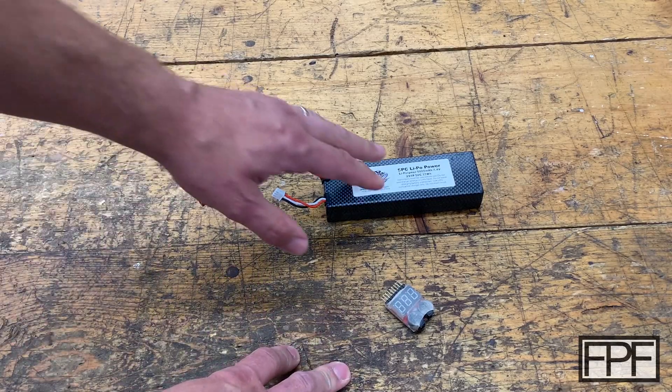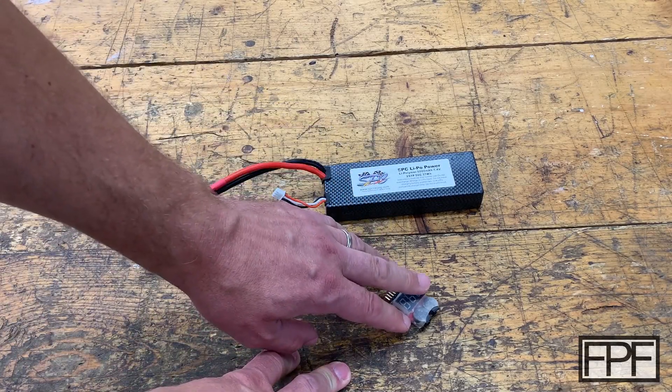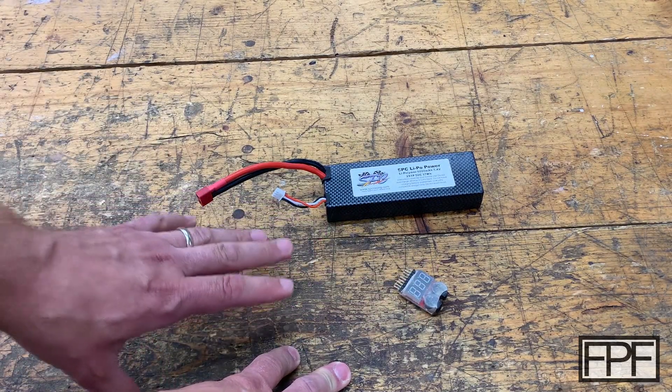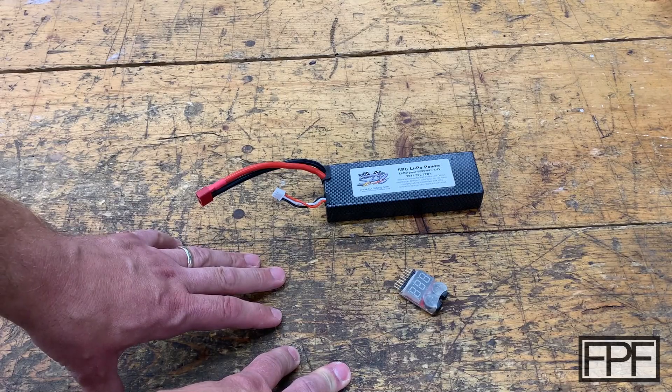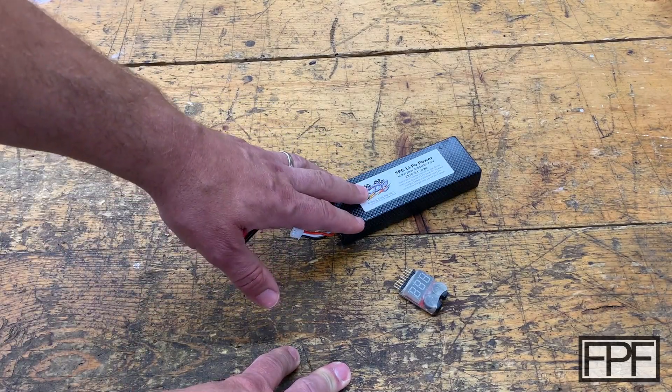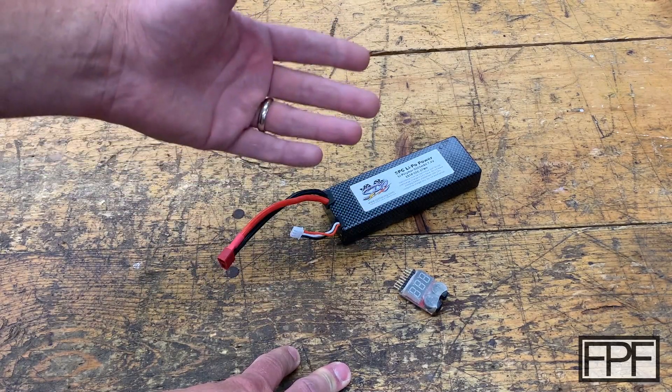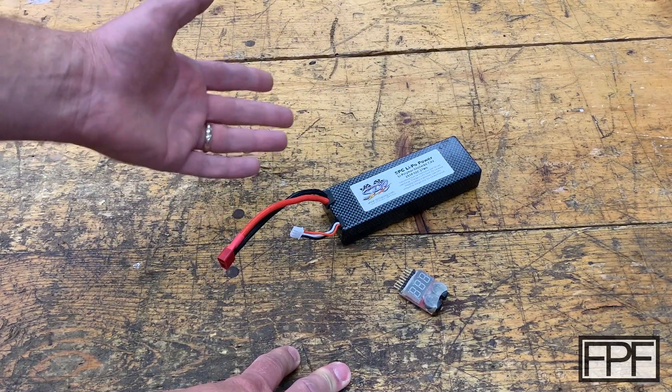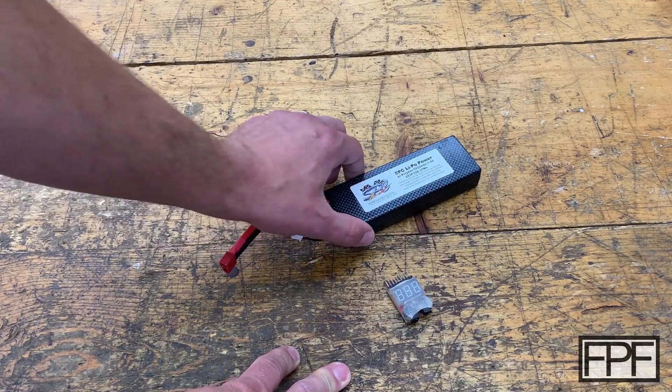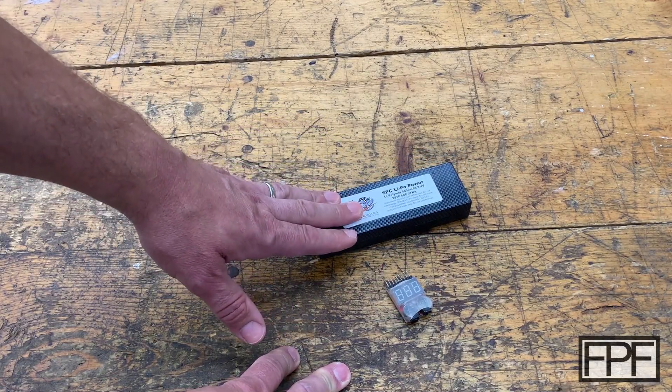So what I've got on the bench this week is a LiPo battery and a LiPo battery alarm. If you're in the RC hobby at all, these things are probably not foreign to you, but for those that aren't, this battery is used in a remote control vehicle—could be a car, could be a truck, could be a quad, boat, plane, doesn't matter. And then this is an alarm that's designed to let you know when the voltage of this battery is getting too low.